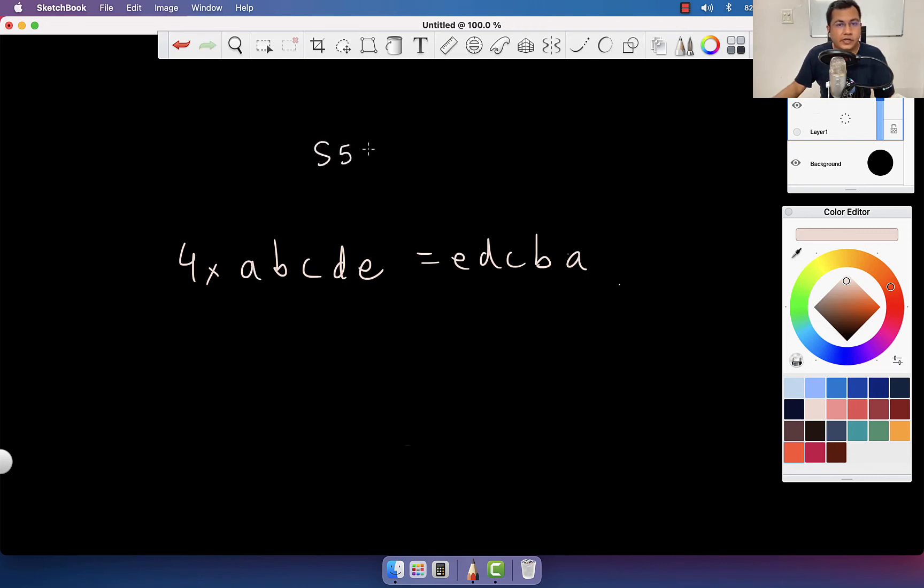Okay, welcome to season 5 episode 6 of Number Theory Master Class, continuing from the previous episode. This time we have a five-digit number, so we multiply it by 4 and we get its reverse.